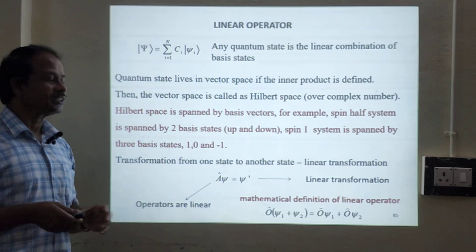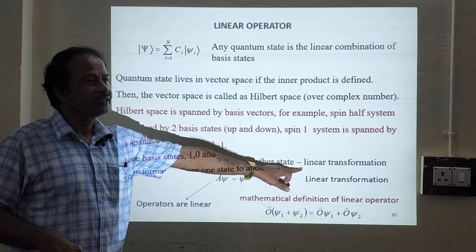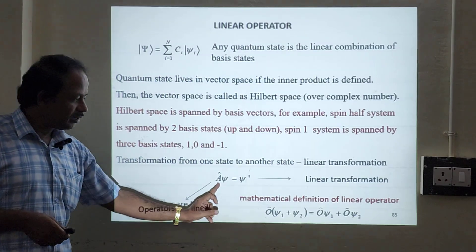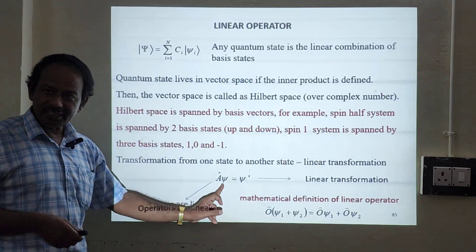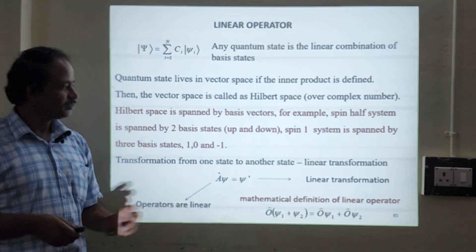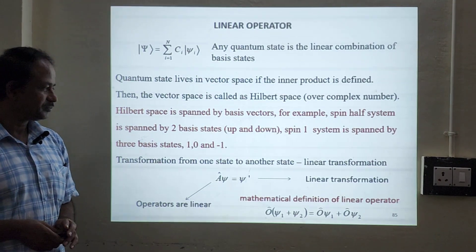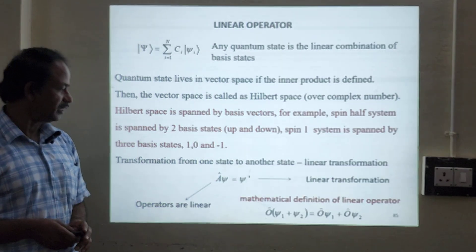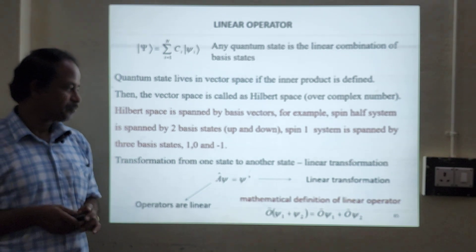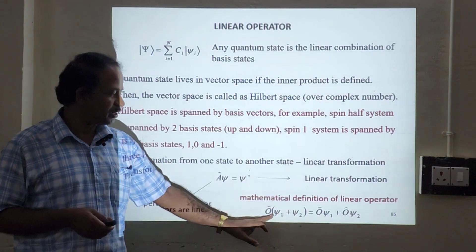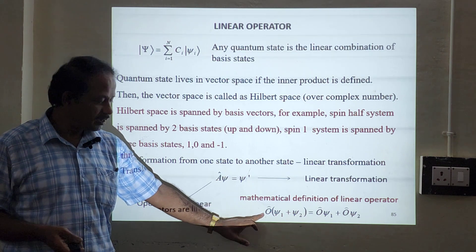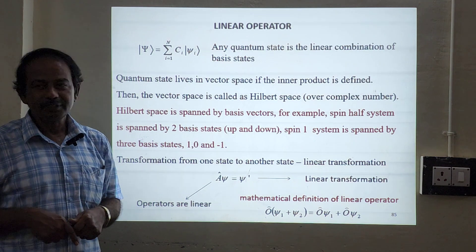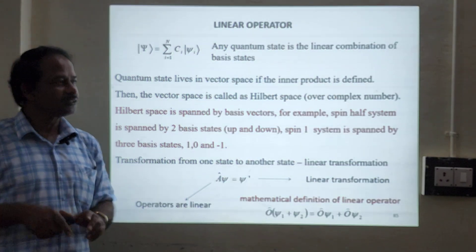Now the transformation from one state to another state will always be linear — linear transformation. Suppose operator A operates on psi will give you another wave function. So this is called the linear transformation. The operator operates on the combined system is equal to the sum of the operators operating on the individual system.